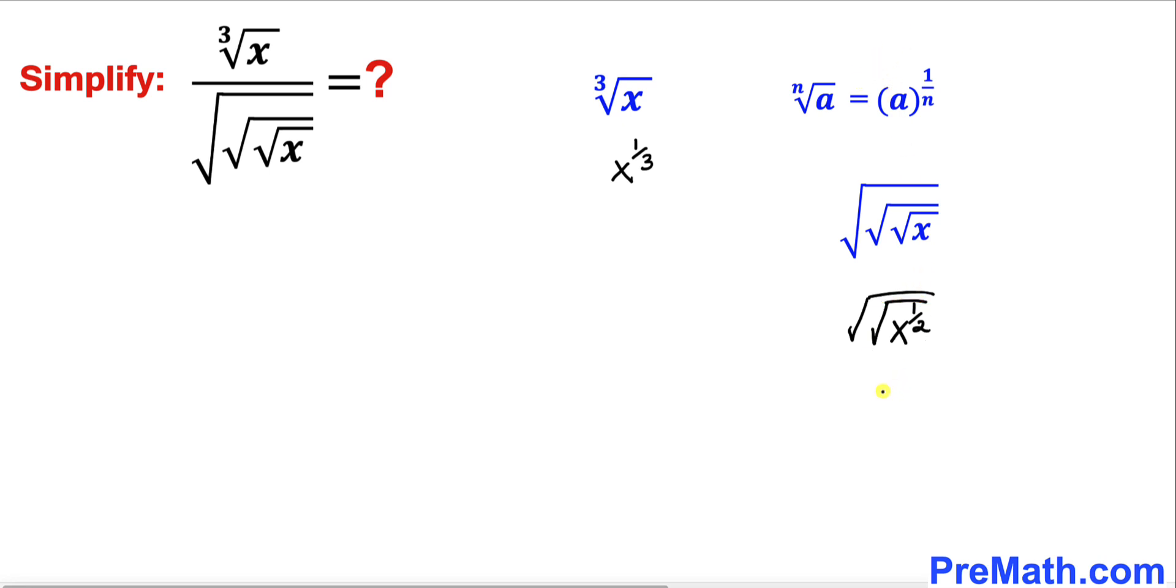Therefore this can be written as x to the power of 1 divided by 2, then to the power of 1 divided by 2. We take the square root, and finally this becomes x to the power of 1 divided by 2, and once again 1 divided by 2.